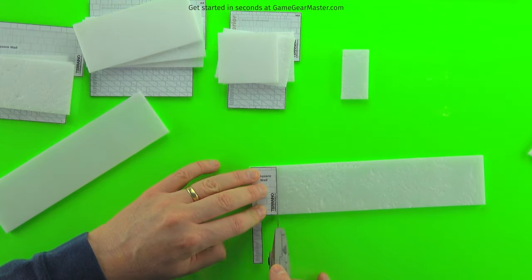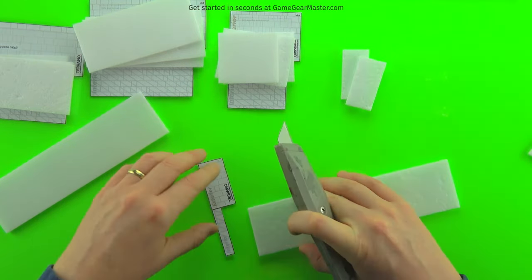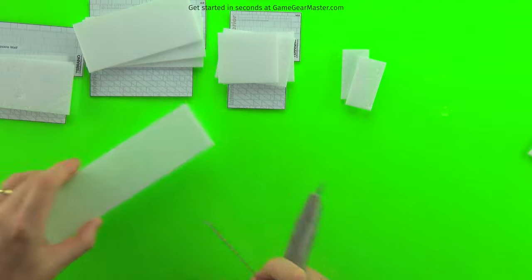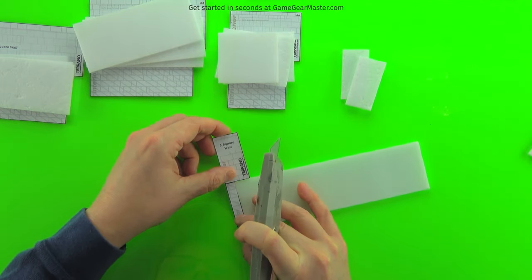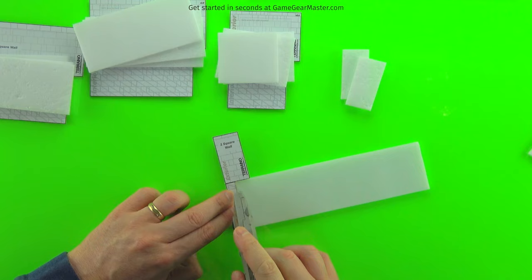And I'm just scoring along the edge of the template and then snapping off the pieces that I need. And on this small one square wide wall, please be careful when cutting that interior piece. There's not a lot of things to hold on to there just because it is such a narrow little piece. So please watch your fingers.